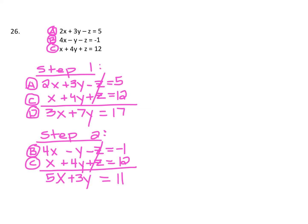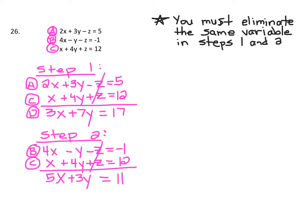One important thing: whichever variable you cancel off in step 1 — we said we're canceling off the Z's — you have to cancel off that same exact variable in step 2. In steps 1 and 2, we are canceling off the same variable. So write this at the top of the page: you must eliminate the same variable in steps 1 and 2. If you eliminate the Z's in step 1, don't try to eliminate the X's or Y's in step 2.